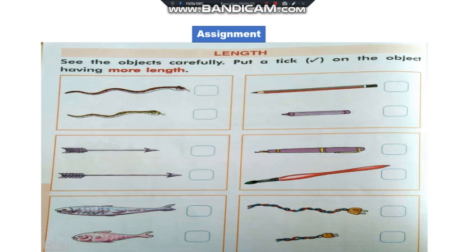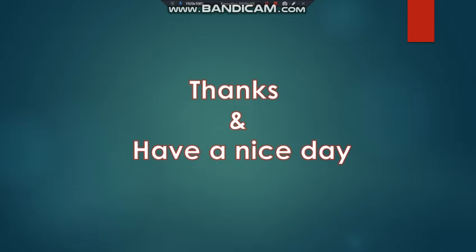Now, students, note down this assignment for your more practice. Pictures are already in your book — check which have more length. The 1st is the picture of snakes, the 2nd is an arrow, and the 3rd number is fish. Thanks, students, and have a nice day. See you again. Thank you.